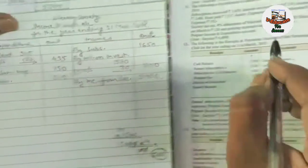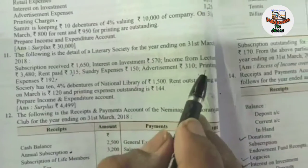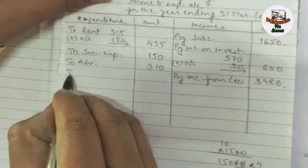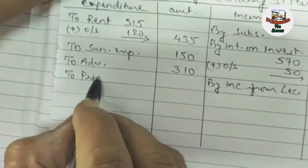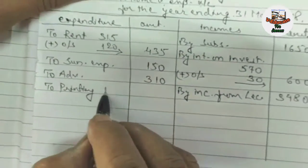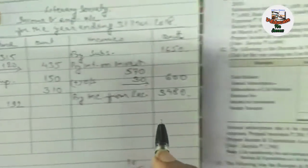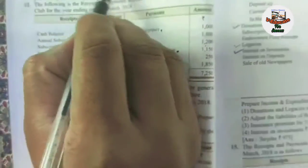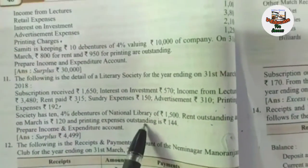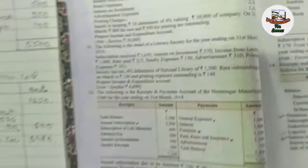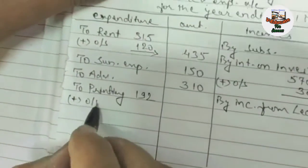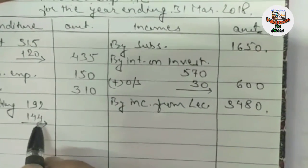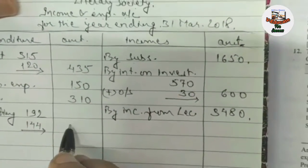Then it is given printing expenses: ₹192. At the last it is written that printing expenses outstanding are ₹144. You have to add the outstanding amount of ₹144, which are still to be paid and belong to the current year. The total printing expenses will be 192 + 144 = ₹336.